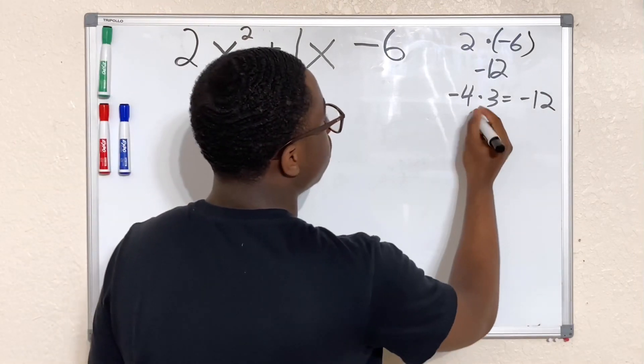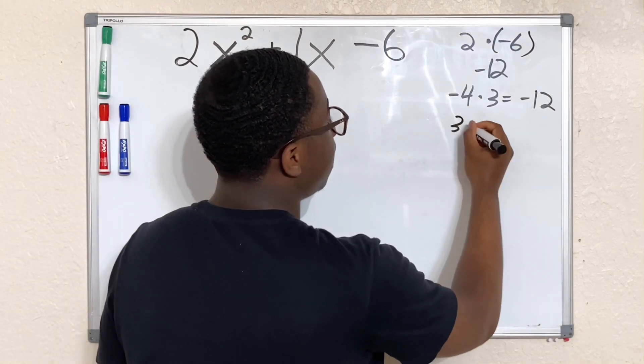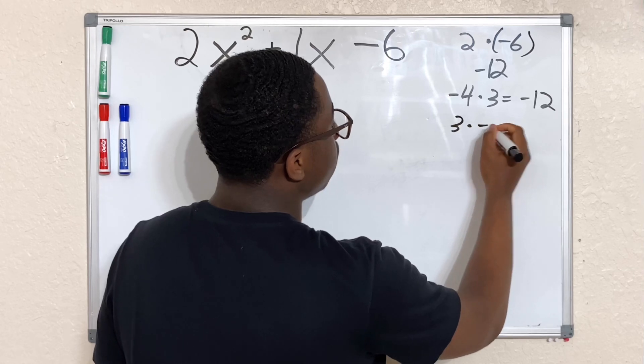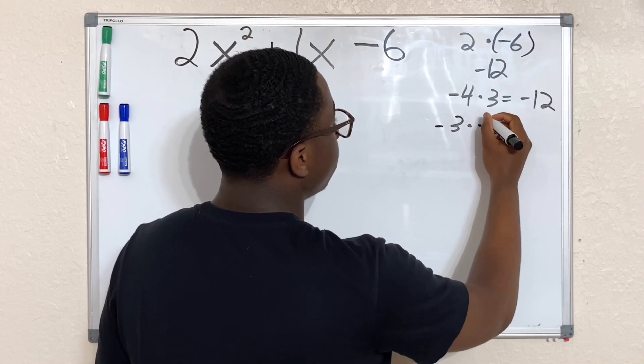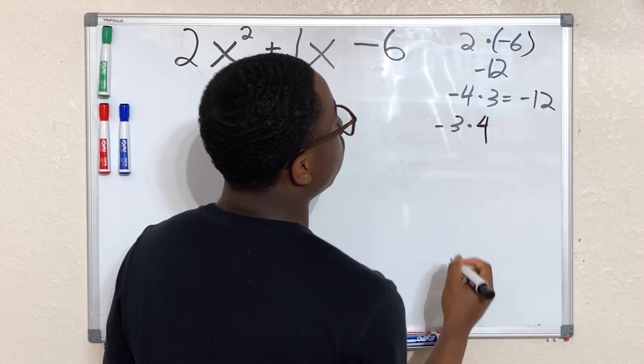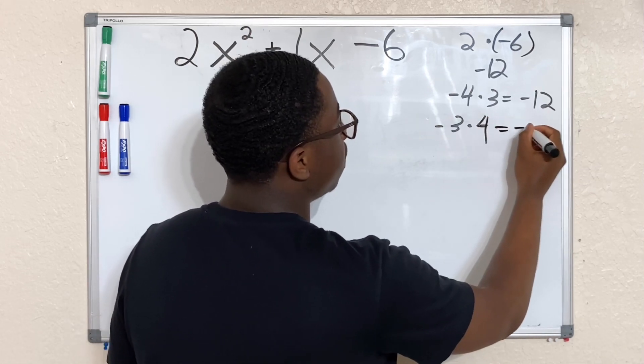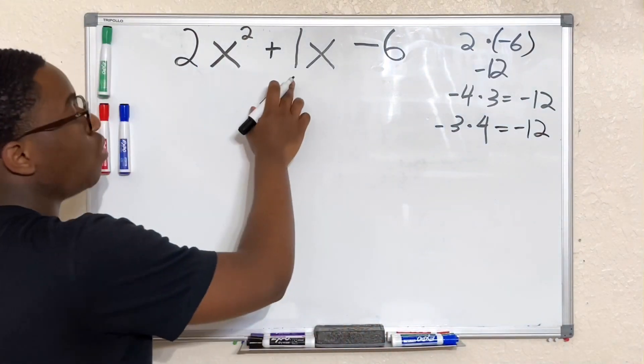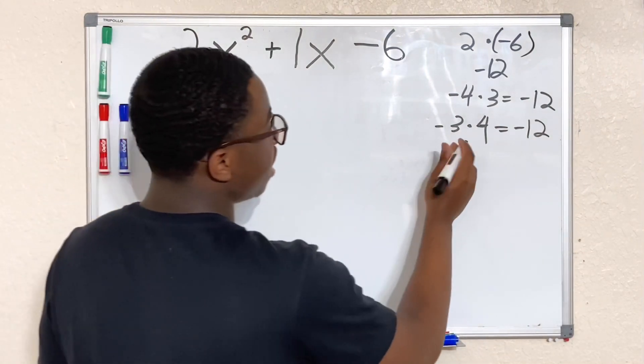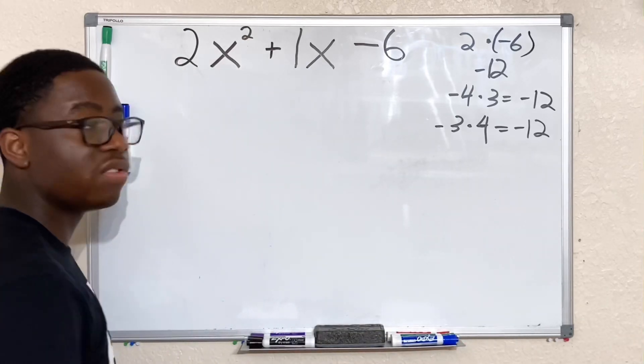So how about we do -3 times 4. We have -3 times 4. -3 times 4 is going to equal -12, and -3 plus 4 is going to give us a 1. It's like the same thing, the same as 4 minus 3. That'll give us 1.